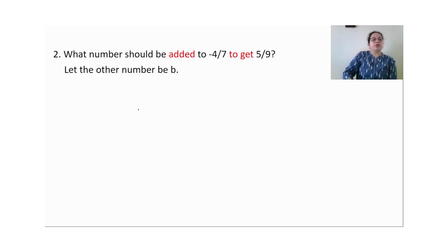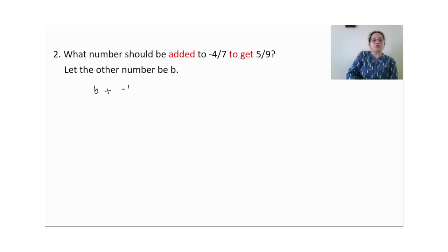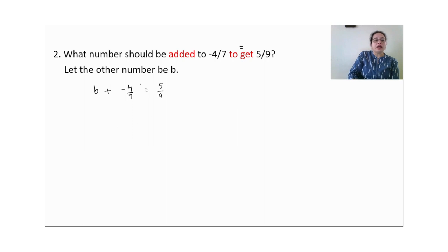Word problem 2: What number should be added to −4 by 7 to get 5 upon 9? Let the number be b. 'Added' means plus sign. Set up the equation: b + (−4/7) = 5/9. Shift −4/7 to the right-hand side; it becomes +4/7.